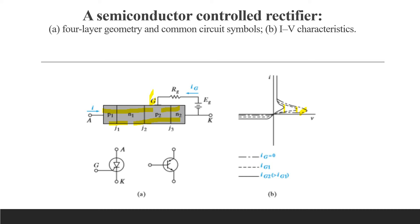It is not necessary to maintain the gate current once the SCR switches to the conducting state. In fact, the gate essentially loses control of the device after regenerative transistor action is initiated. For most devices, a gate current pulse lasting a few microseconds is sufficient to ensure switching. Ratings of minimum gate pulse height and duration are generally provided for a particular SCR device.